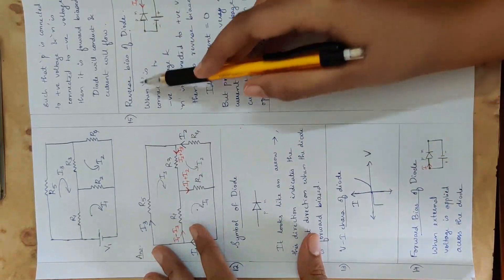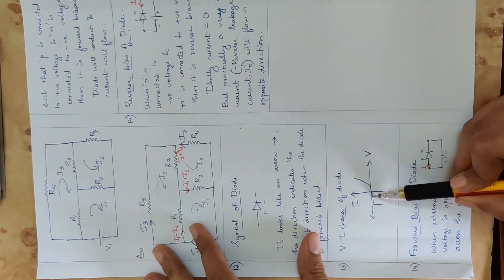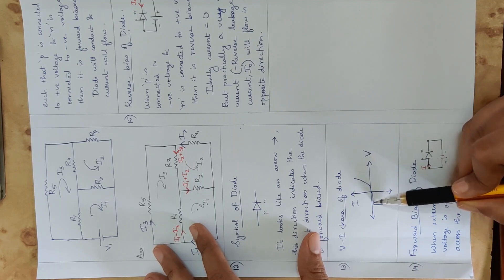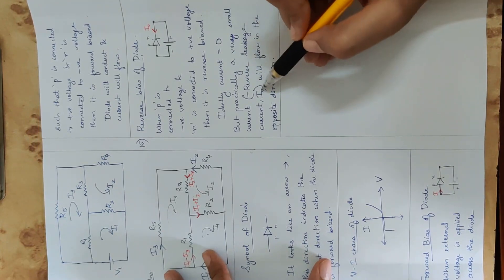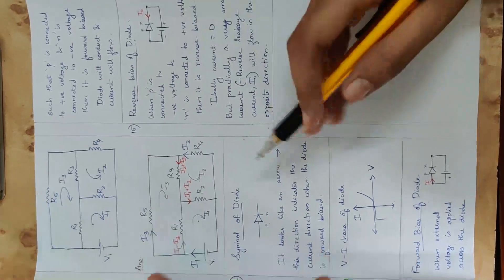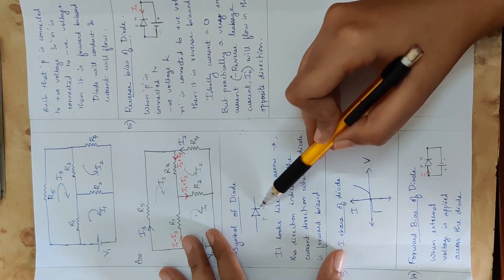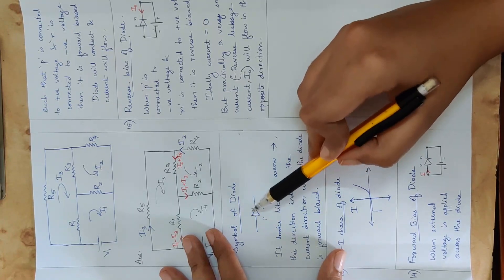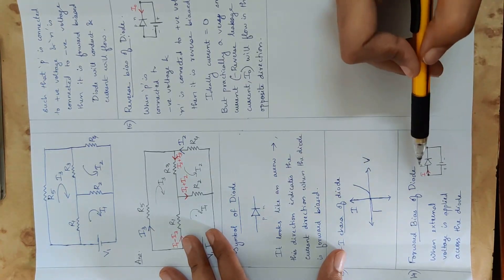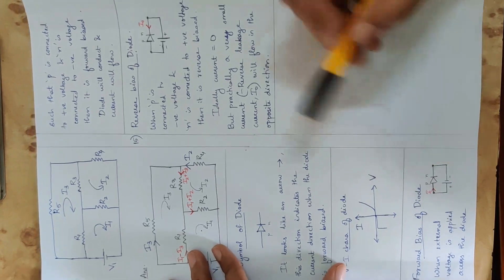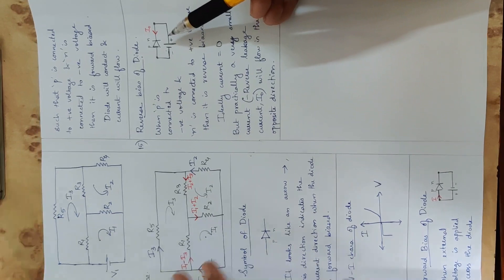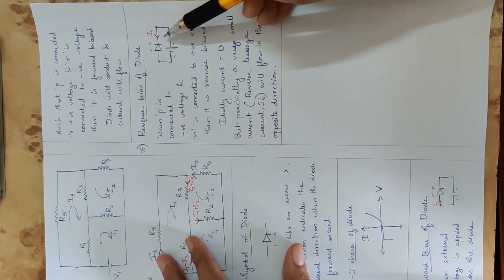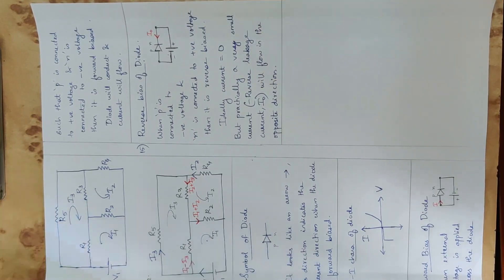In reverse bias, this small reverse leakage current flows in the micro-ampere range. Ideally, we take it as zero, but practically a small leakage current I0 flows in the opposite direction. The diode has a P region and N region. In forward bias, P is positive and N is negative — current flows. In reverse bias, P is negative and N is positive — the diode does not conduct. The current is ideally zero, but practically a very low reverse leakage current I0 flows.